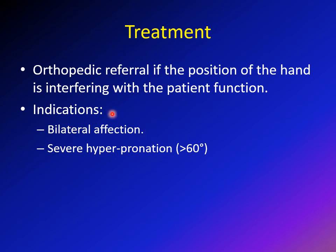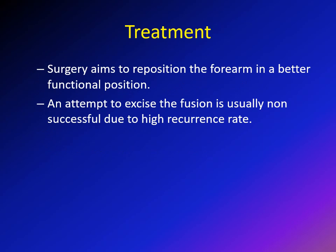Surgery is considered when there is functional impairment, which usually occurs in bilateral cases with severe hyperpronation. If the child is hyperpronated more than 60 degrees, shoulder and wrist motion cannot compensate, and if it is bilateral, surgical intervention may be considered.